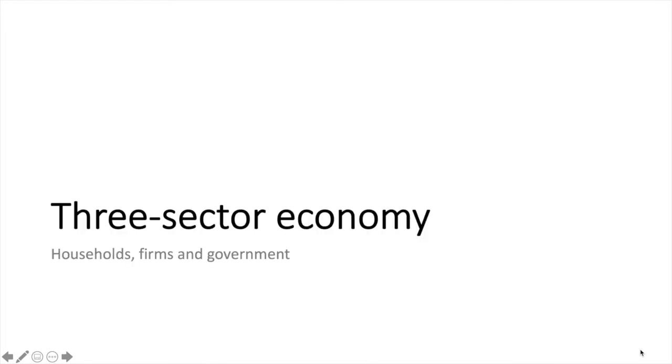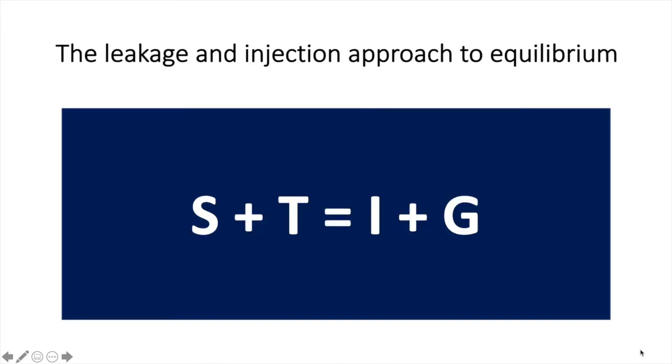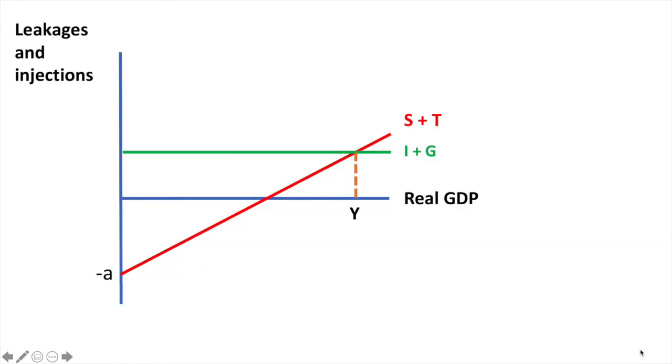In the three sector economy, it is still closed but has in government. The two leakages in this model include savings and taxation whereas the two injections are investment and government spending. Just as before, we add more detail to our labels.